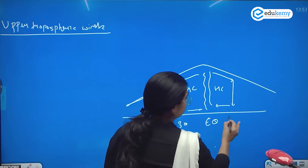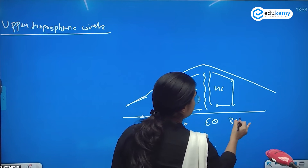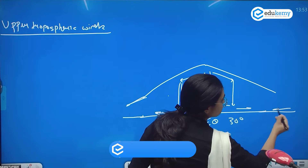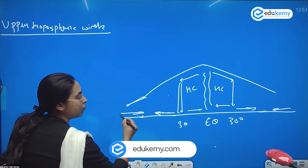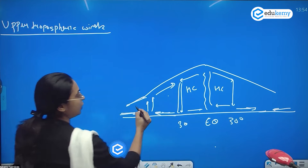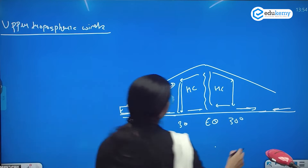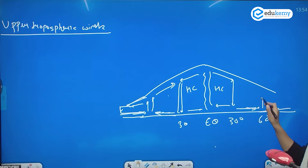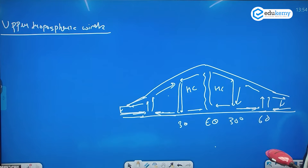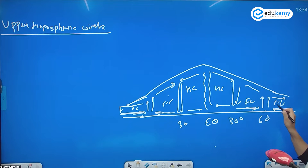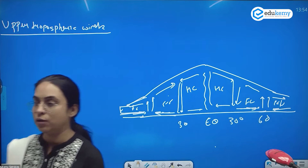At 30 degrees, the wind from 30 degrees and the wind from the poles meet and are dynamically forced to rise. The winds from the polar and the tropic regions meet at 60 degrees, are forced to rise, move along the tropopause, and complete the cell. This is your Peril cell, and this is your Polar cell.